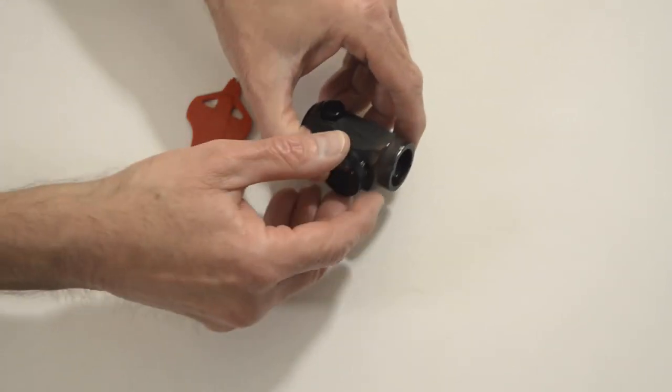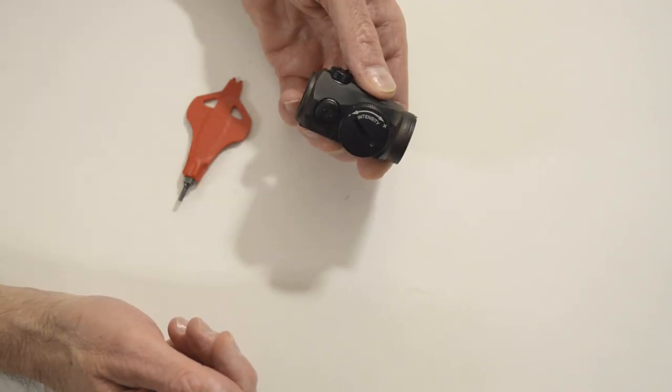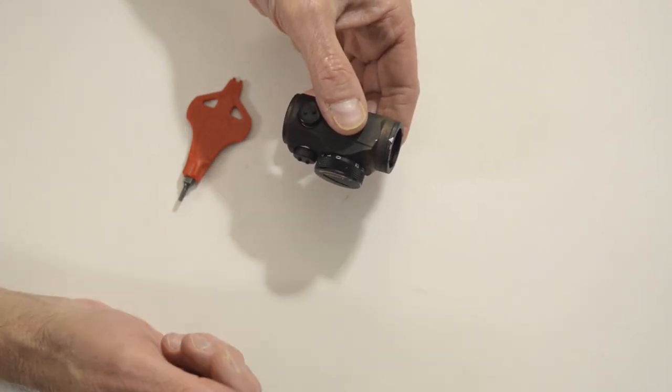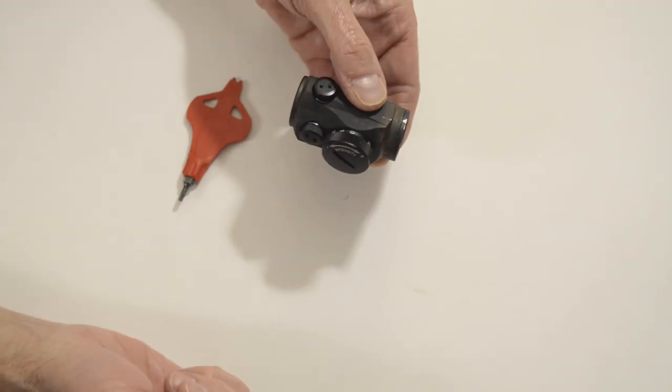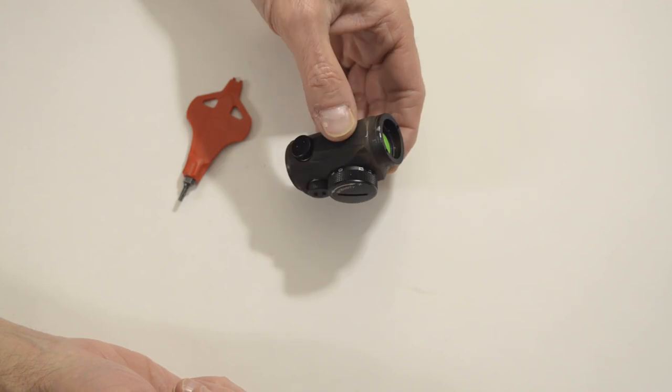Every now and then I hear about somebody who needs to put a cardboard shim in their battery cover to maintain contact, or somebody has just replaced the battery and during the match the dot keeps going out on them.